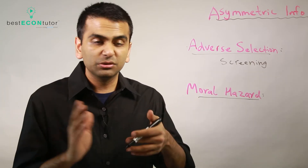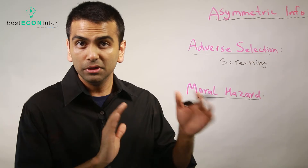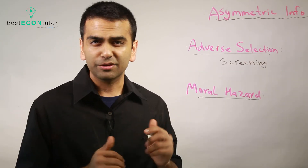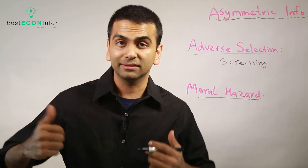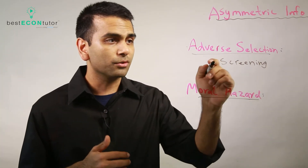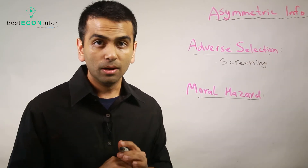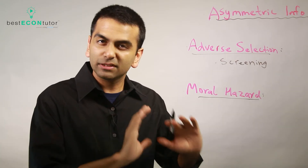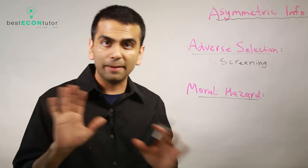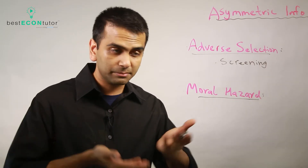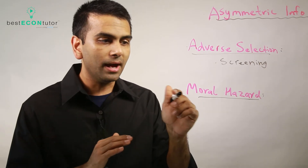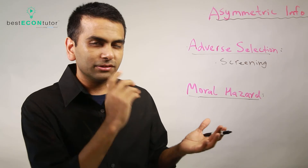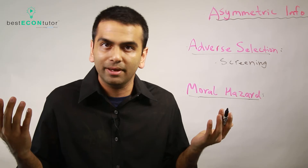If you overlook the lying and charge everyone the low healthy premium, you end up paying out more than expected because some people are actually unhealthy — even though they lied. That's called adverse selection: you selected the 'bad' people into the low-cost category. One way to fix this is screening — instead of a survey, hire a doctor to do a physical for everyone you're insuring. Another fix is signaling, where the insured person demonstrates their health status themselves. Either screening or signaling can eliminate adverse selection.